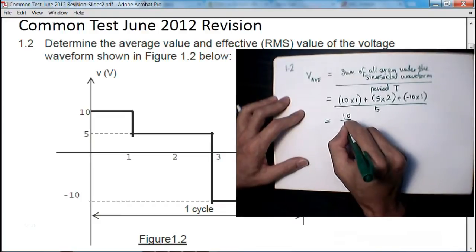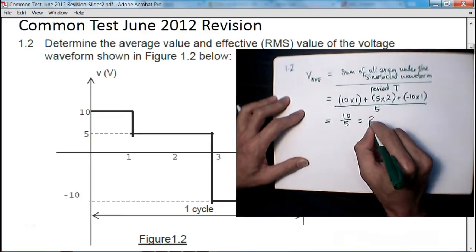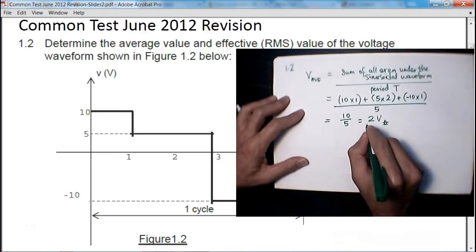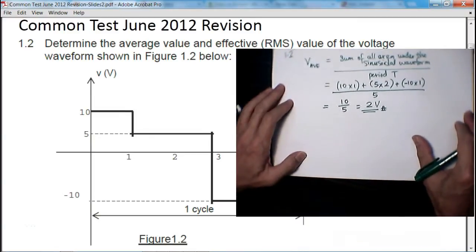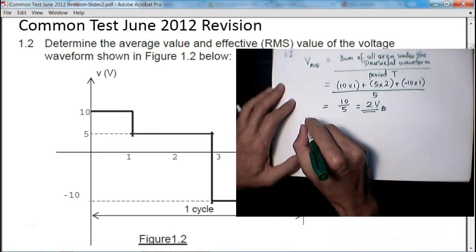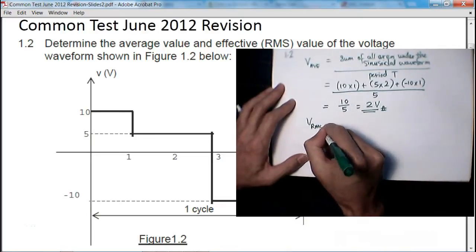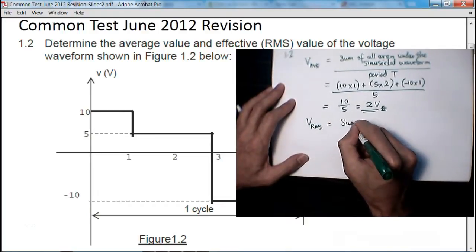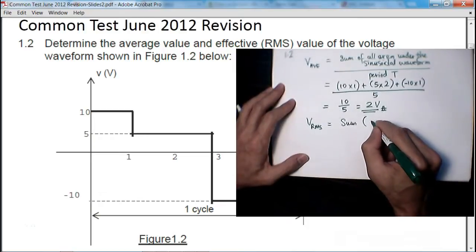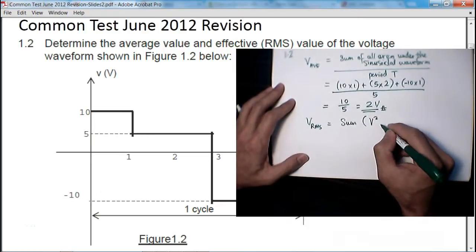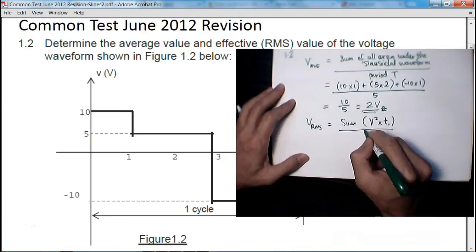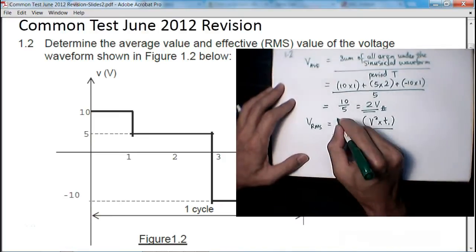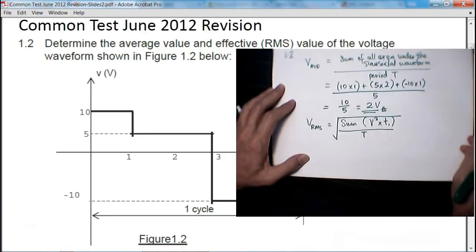Now the RMS value is defined as the sum of all the squares, in this case the square multiplied by the duration T, the short duration T, divided by the period T, then square root of the whole thing.